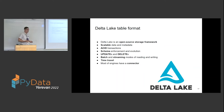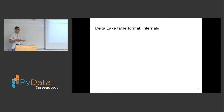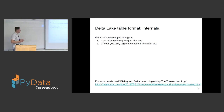Now let's look briefly at the internals so we get some idea of how it actually works and why it provides those features. Looking physically at what it is in object storage: Parquet files contain the actual data. Then there is a delta log folder which contains the metadata, also called the transaction log — essentially a history of all the changes that happened to the data.